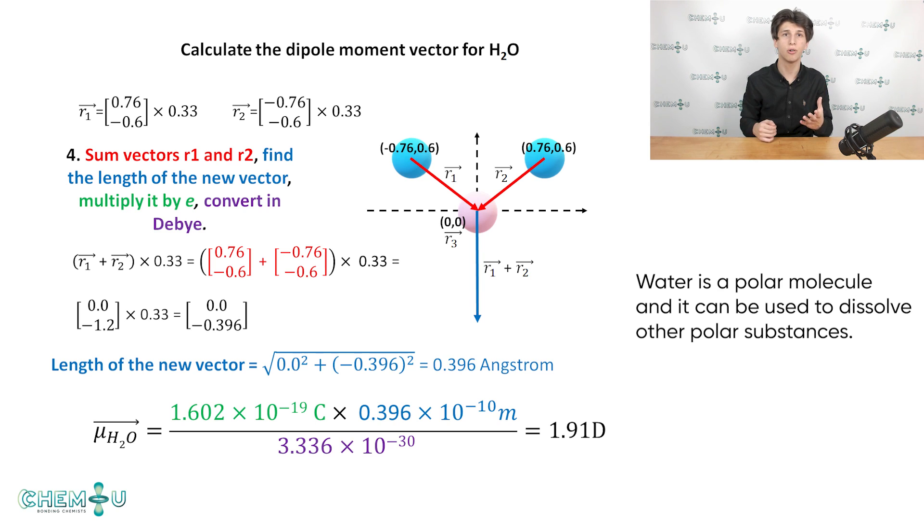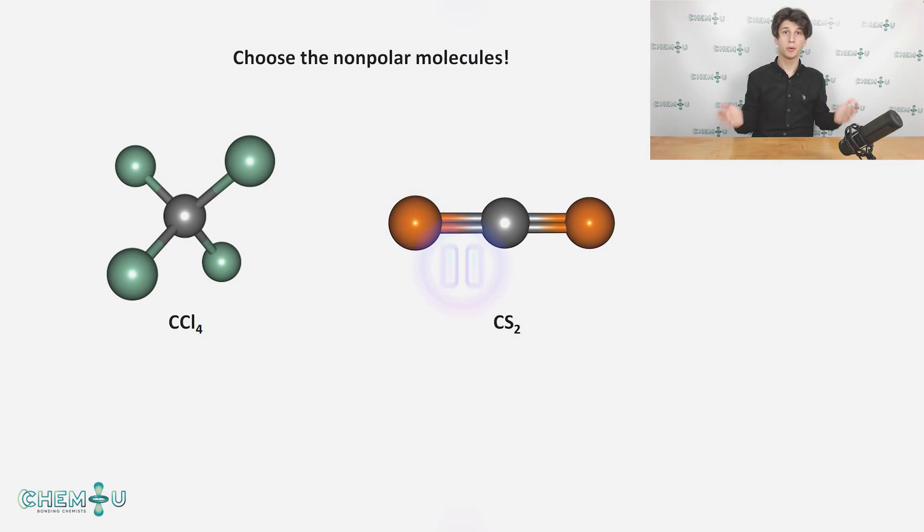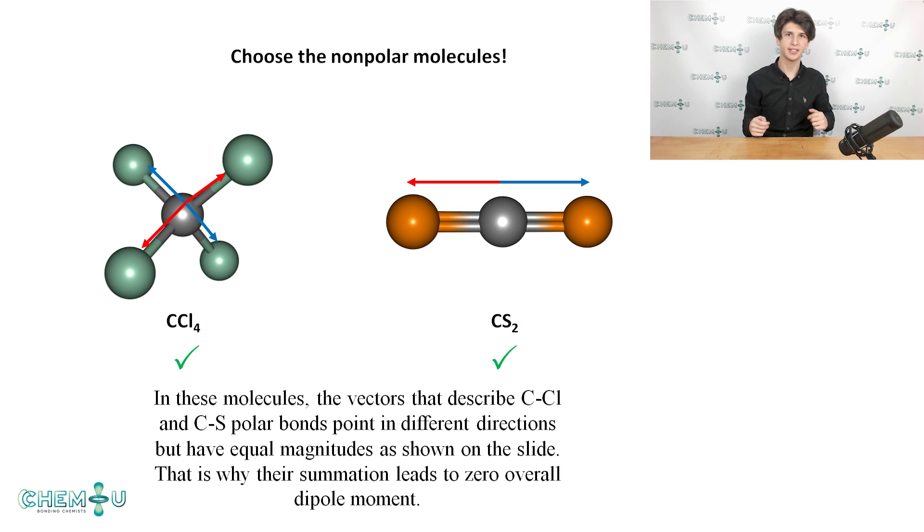If the dipole moment is 0, then the molecule is said to be nonpolar. Pause the video and try to choose nonpolar molecules based only on their geometries and constituent atoms. Here are the right answers. As you can see, both CCl4 and CS2 molecules are nonpolar despite the polar covalent bonds present in them. The reason is the vector nature of a dipole moment. In these molecules, the vectors that describe C-Cl and C-S polar bonds point in different directions but have equal magnitudes as shown on the slide. That's why their summation leads to 0 overall dipole moment. So these molecules are nonpolar and they can be used as solvents for other nonpolar substances.